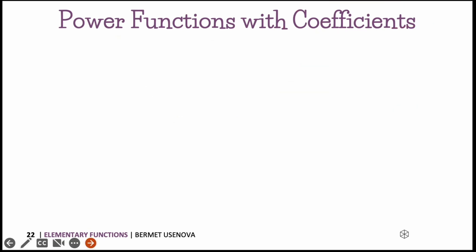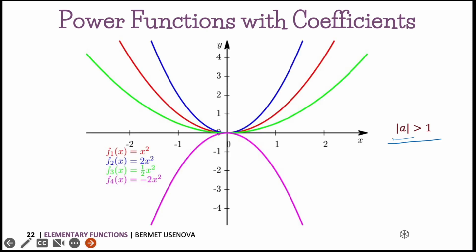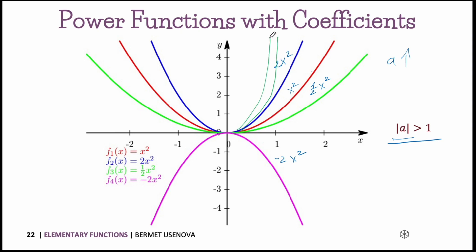If the absolute value of the coefficient is larger than 1, it stretches the graph in the y-direction. For example, we have 2x squared, x squared, and one-half x squared, and minus 2x squared. The more we increase a, the further the graph stretches. On the other hand, if the absolute value of a is smaller than 1, the graph goes in the opposite direction, becoming flatter and flatter.